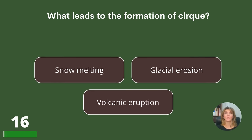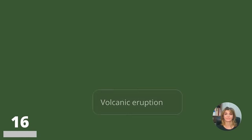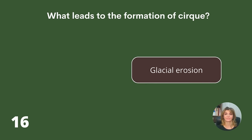What leads to the formation of a cirque? Snow melting, glacial erosion, or volcanic eruption? Answer: Glacial erosion.